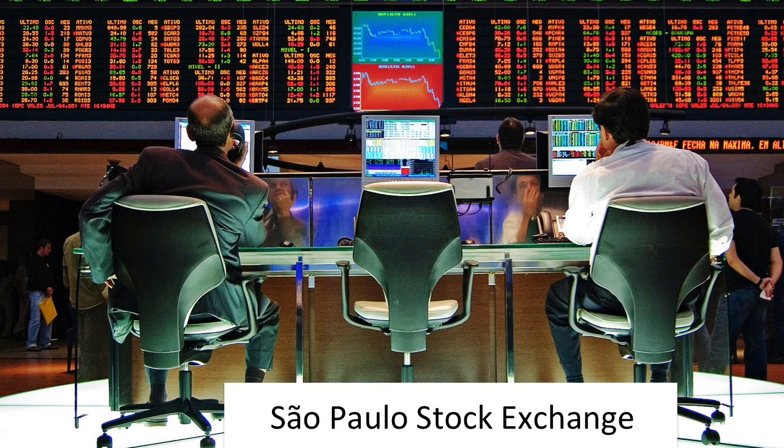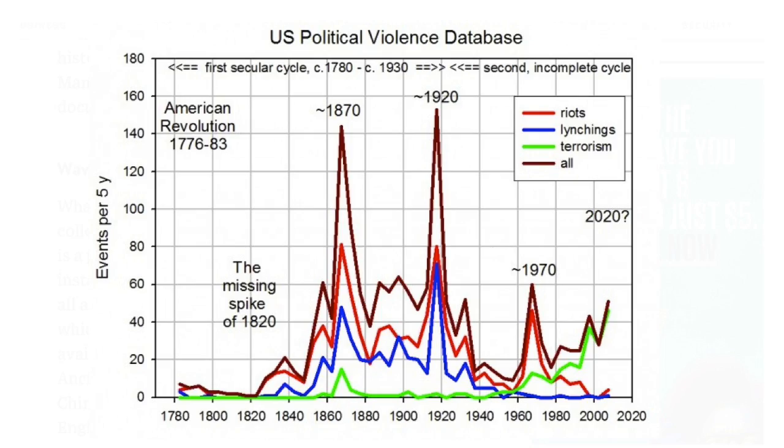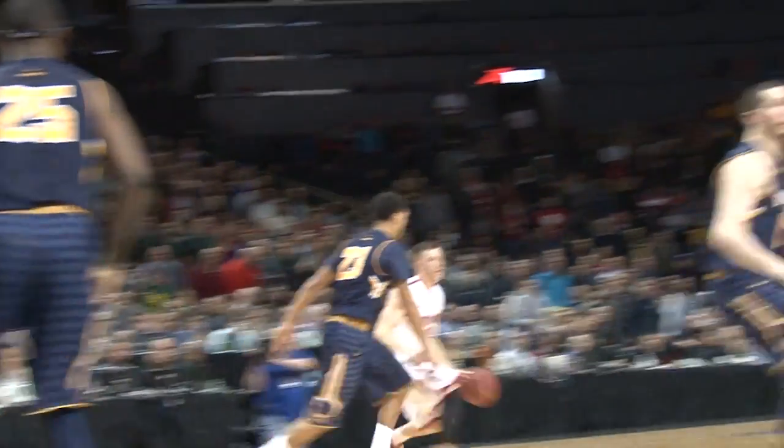Some modern applications of big data crunching include Facebook predicting when a couple will enter a relationship, history looking for patterns when violence will spike, or researchers choosing the best March Madness bracket.